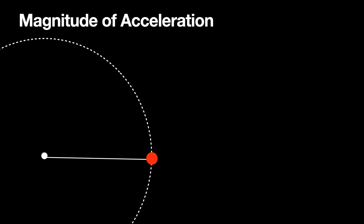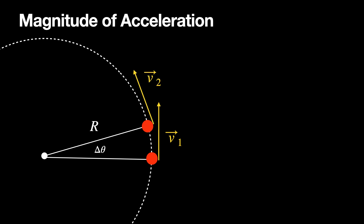Let me replace the car with a dot moving in a circle. A little bit of time later it has moved an angle delta theta, and the radius of the circle is R. I have V1 and V2 and I want to find the change in velocity, because the acceleration is the change in velocity divided by the change in time. Moving these two vectors to the side, I can see V1 and V2 with angle theta between them, and I want to get delta V — that is, V2 minus V1.